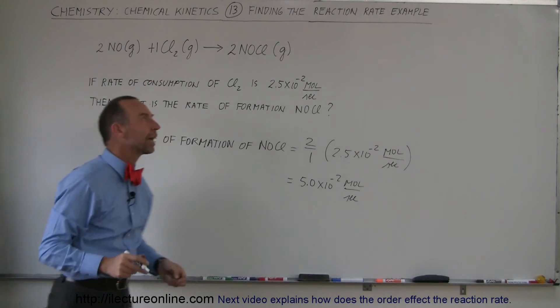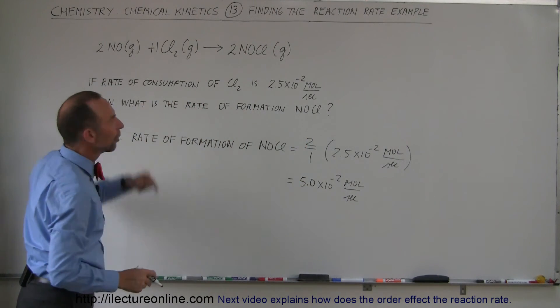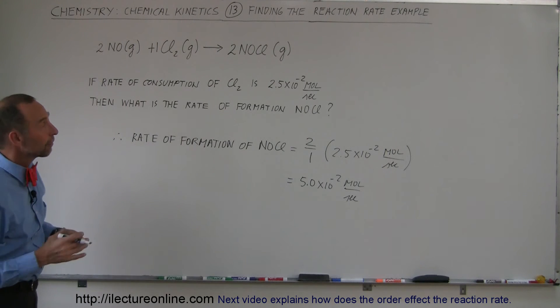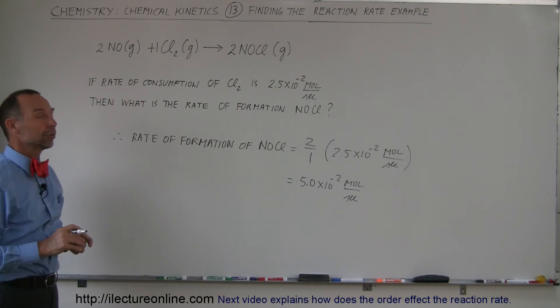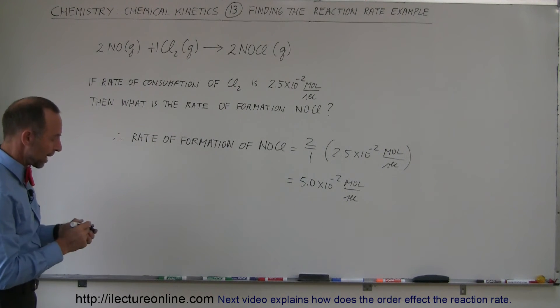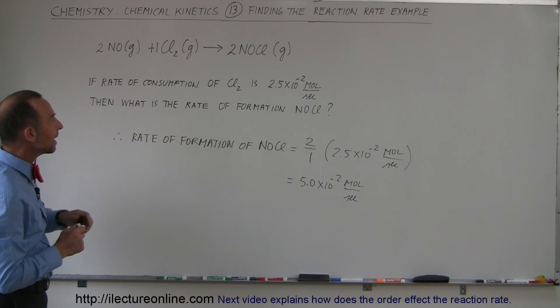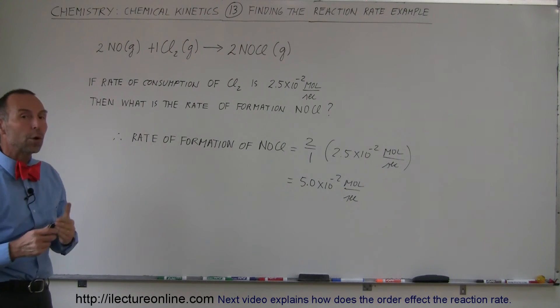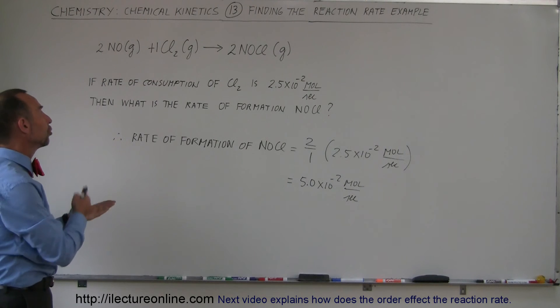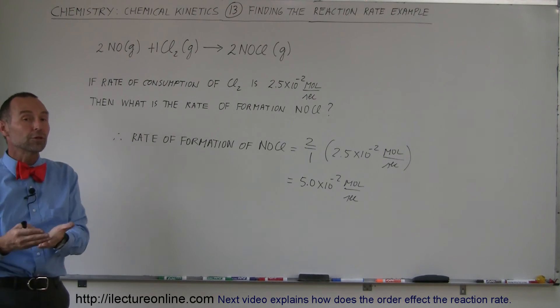So we saw in the previous videos that the coefficients here in front do not have a lot to do with the order of the reaction. They don't have a lot to do with the reaction rate constant K, but it does still play a role when we try to figure out how much we're consuming on the reactants and how much we're producing on the products.